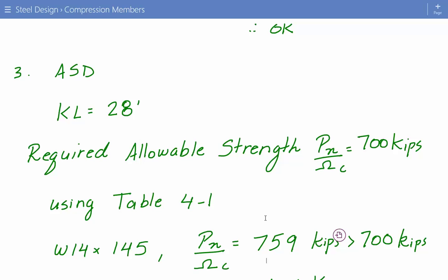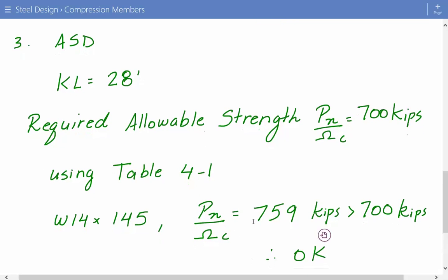W14 by 90 doesn't pass, 99 doesn't pass, 109 no, 120 no. W14 by 132 has 647 kips allowable strength, so we're getting close but not enough. W14 by 145 has an allowable strength of 759 kips, and that's greater than 700 kips, so that's good. This is acceptable.